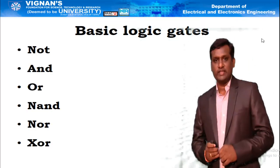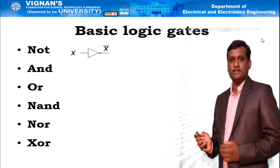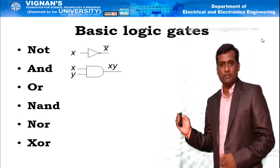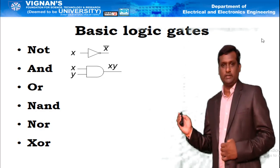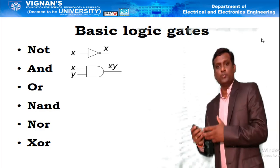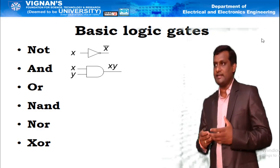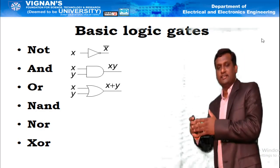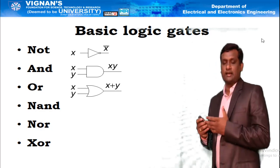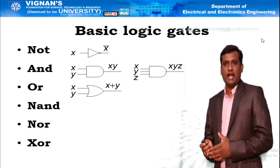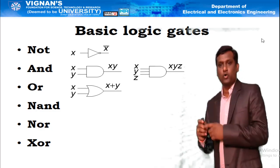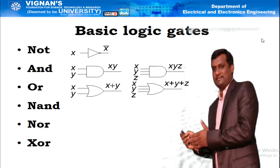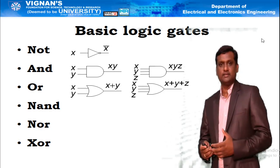Looking at the circuit symbol of each gate and its Boolean expression: the circuit symbol of NOT gate and its Boolean expression is X̄. The circuit symbol of AND gate — it is a two-input gate with inputs X and Y, and output is X·Y, or in general mathematics, X into Y. The circuit symbol of OR gate and its Boolean expression is X OR Y, or in general mathematics, X plus Y. There are also three-input AND gates and three-input OR gates, but the output is single only. From these three basic gates, the other gates are derived.